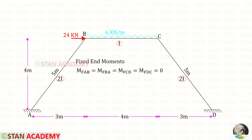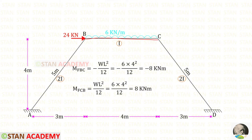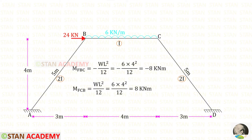Now let us find the fixed end moments. In AB and CD there is no load, so all the fixed end moments in these two members are 0. In BC, we have a uniformly distributed load of 6 kN per meter. The formulas for fixed end moments are −WL²/12 and +WL²/12. Here W is 6 and L is 4. After calculation, M_BC = −8 and M_CB = +8.